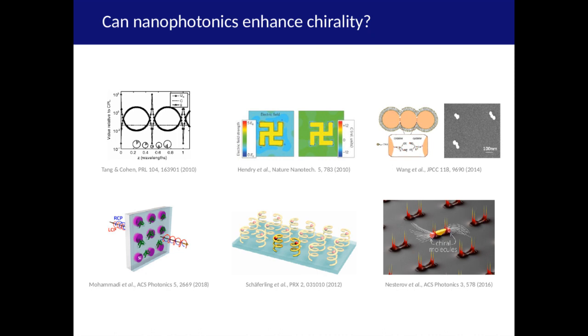Over the years, many nanophotonic structures have been proposed to boost chiral light-matter interactions: metallic and dielectric, chiral and achiral, 2D and 3D. But it is quite challenging to design systems for this purpose and they also suffer from drawbacks.